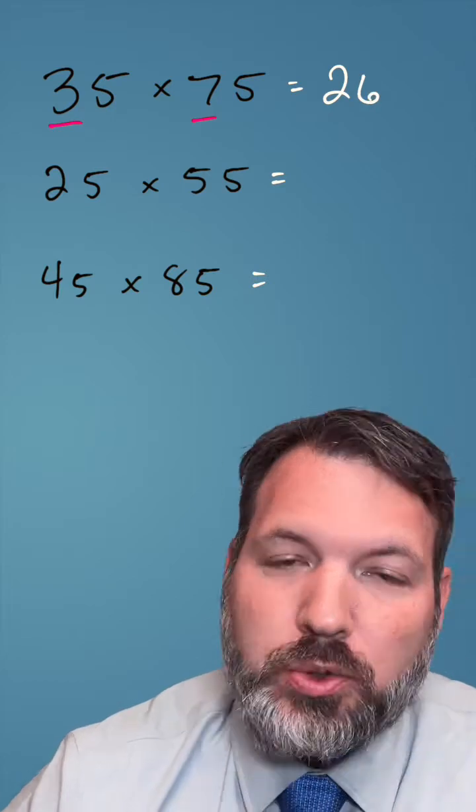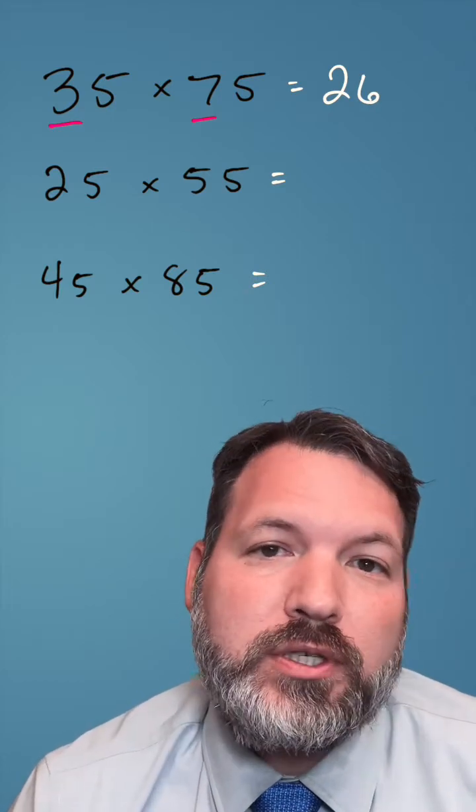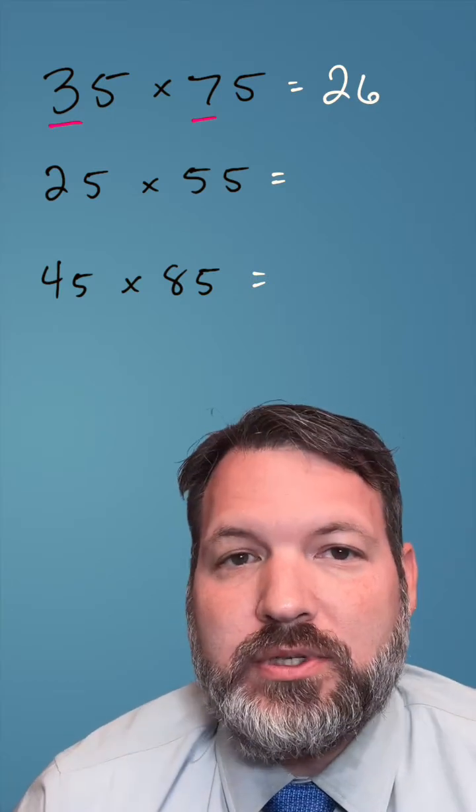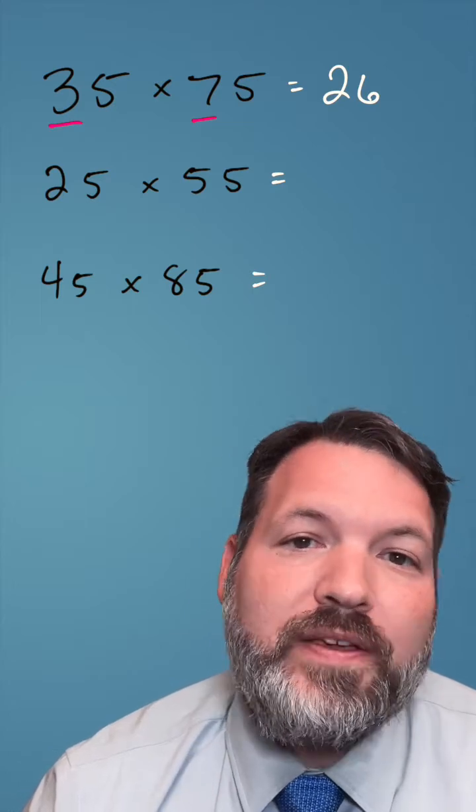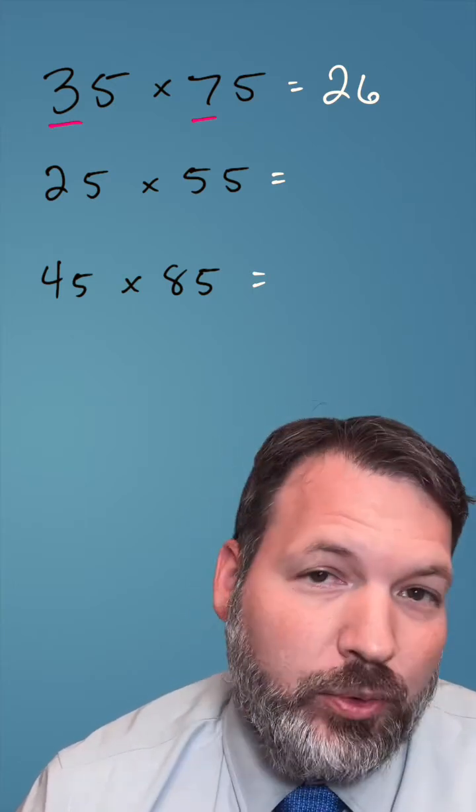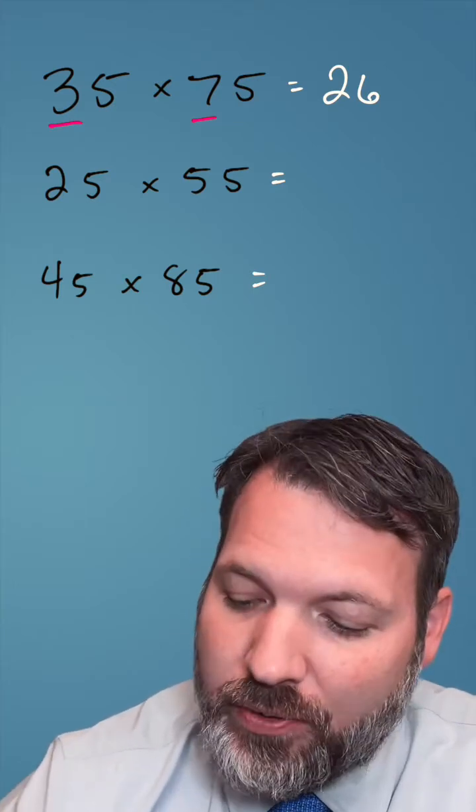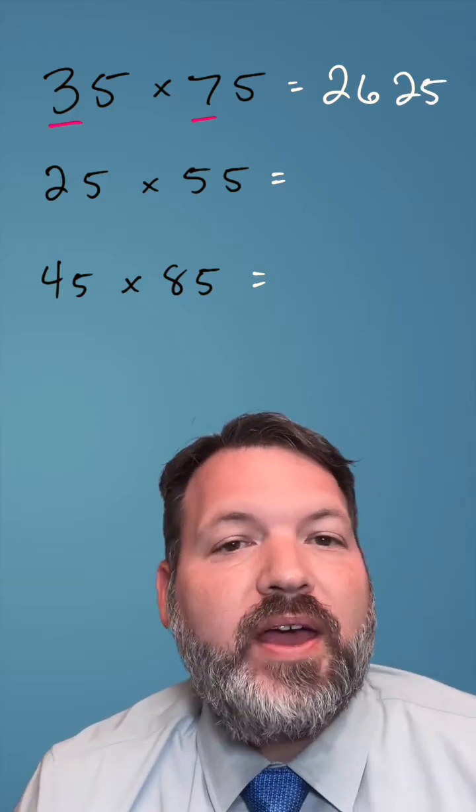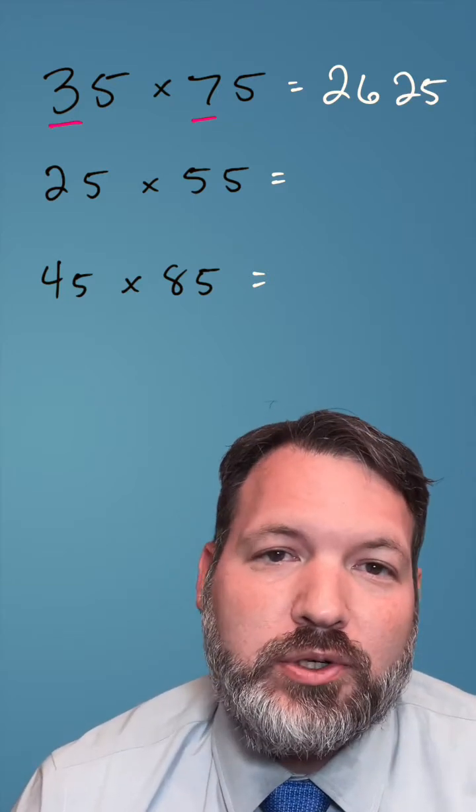So 21 plus five makes 26. Those are our first two digits. Finally, the last two digits will always be either 25 or 75. We had no remainder when we found that average, and so it's always going to be 25, and there you have it, 2,625.